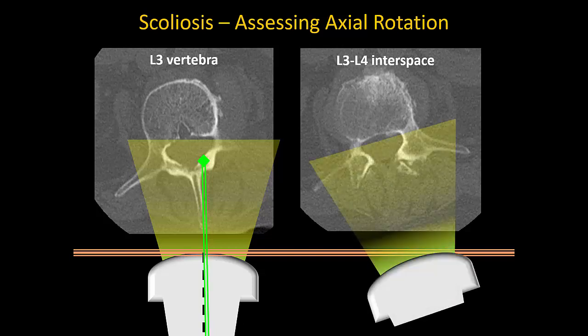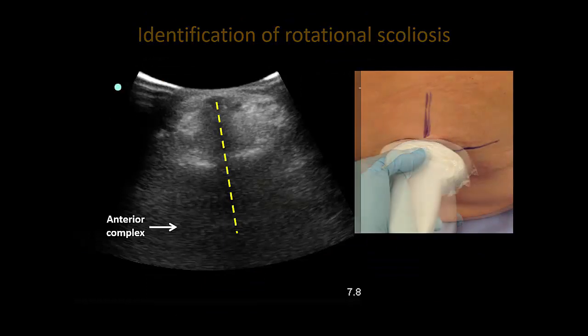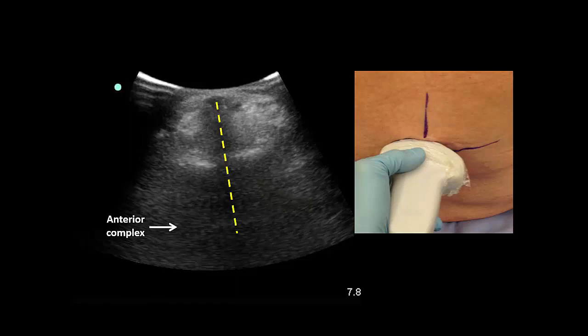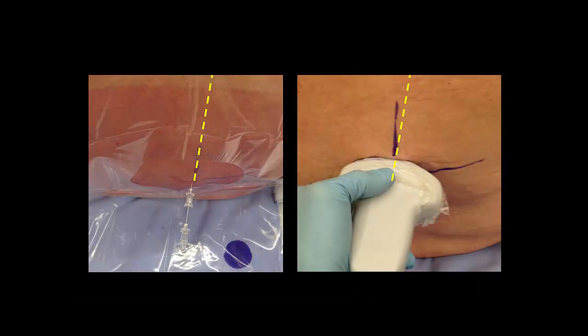The beauty of ultrasound is that we can rotate or angle our probe to bring the beam into line with the axis of the spine, and thus we determine the angle of rotation and consequently the angle of insertion for our needle. Having noticed that the spinous process shadow is tilted when the probe is perpendicular to the surface of the back, we angle the probe towards one side or the other to bring the shadow into a vertical position. This, then, is the angle at which the needle should be inserted for a midline approach to the vertebral canal.